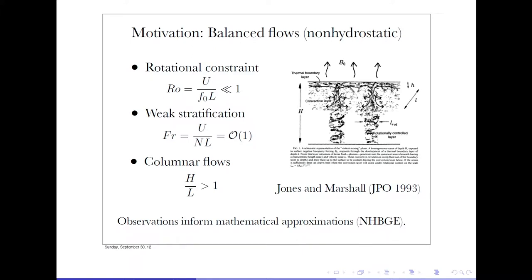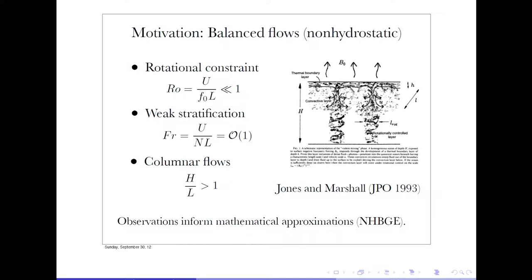We're going to do the same kind of analysis used for quasi-geostrophy. We're still going to assume that the Rossby number is small on these scales, which is reasonable for this particular example where the Rossby number is about 0.2. We'll also have some kind of Froude number describing stratification. These kinds of structures have been studied by many people.